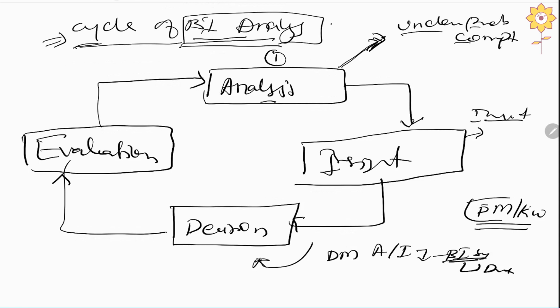Once the decision has been provided, next comes the evaluation phase. Whatever decision has been given by the decision maker will be applied in the business, and they will evaluate whether the decision is proper or not. In this way, the cycle will go on and on, trying to solve the problem faced by the company.